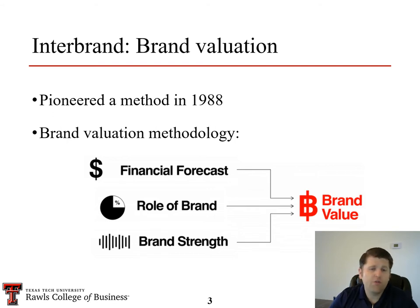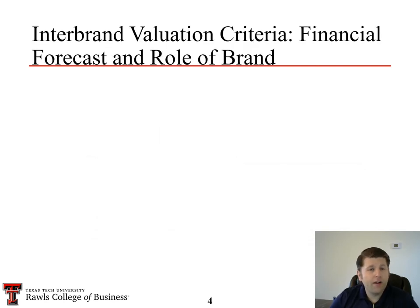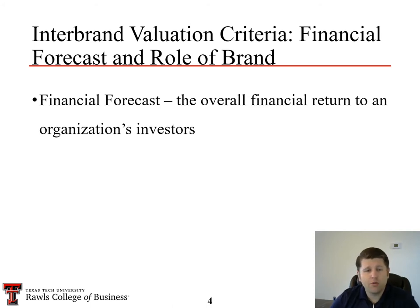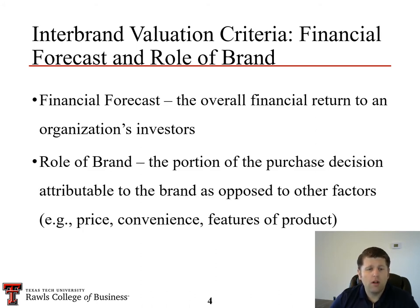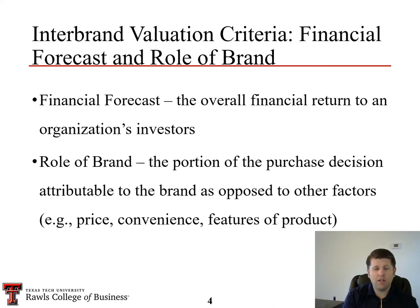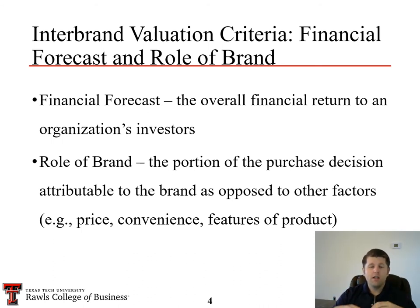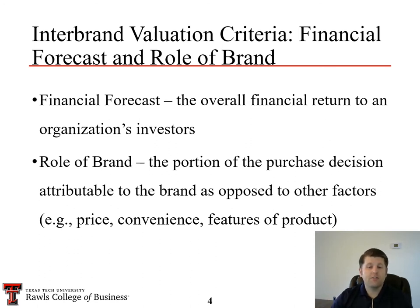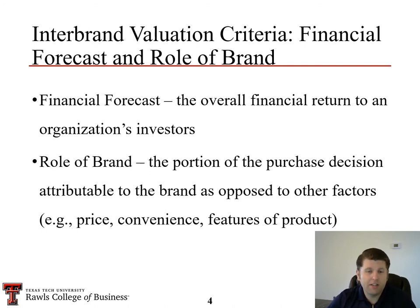Within each of these components — financial forecast, role of brand, and brand strength — there are sub-components. Financial forecast has to do with the financial return provided to investors from the brand. The role of brand has to do with the portion of purchase decisions that can be attributed to the brand in particular, rather than other factors like price, convenience, packaging, or the features of the product. Interbrand has come up with a methodology that can parcel out those other factors and focus on just the aspects related to the brand itself.